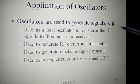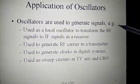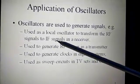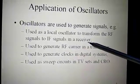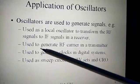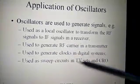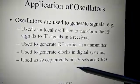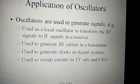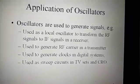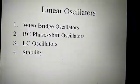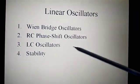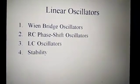Oscillators are used to generate signals. They are used as a local oscillator to transform radio frequency signals to intermediate frequency signals in a receiver. They are used to generate the RF carrier in a transmitter, to generate the clock signal in digital systems, and to sweep circuits in TV sets and CRO. These are some linear oscillators: Wien bridge oscillator, RC phase shift oscillator, LC oscillator and its stability.